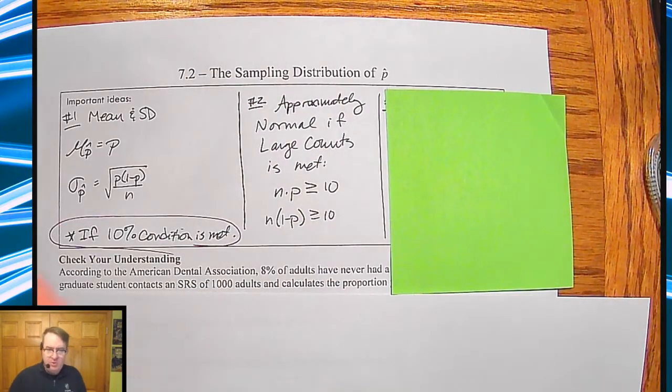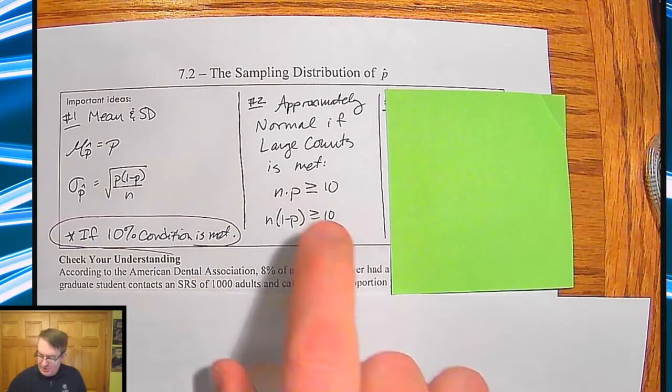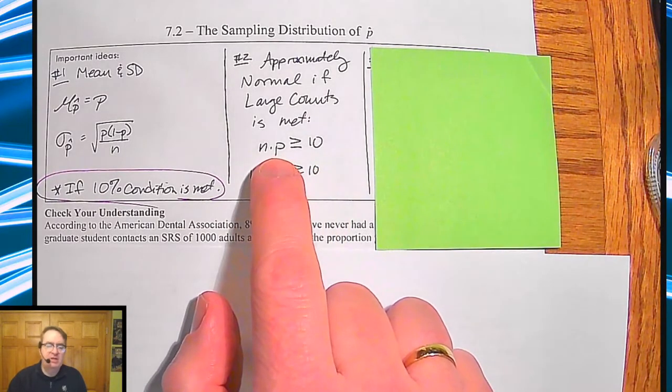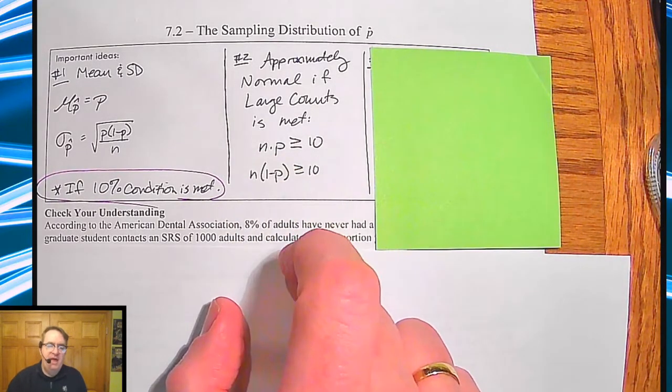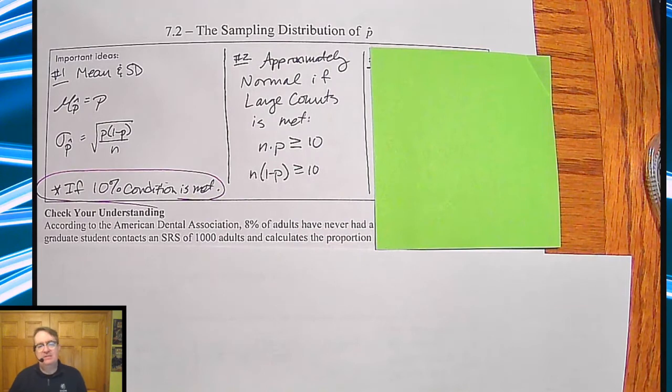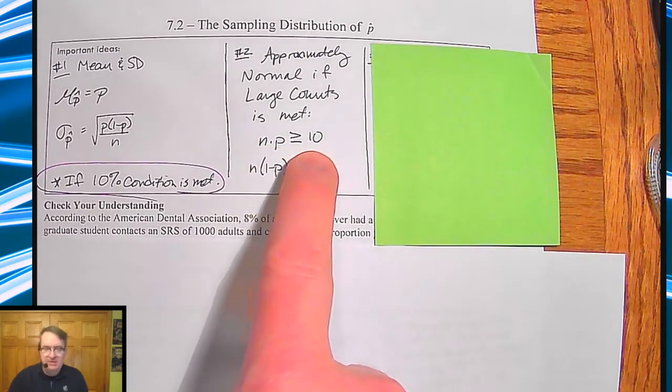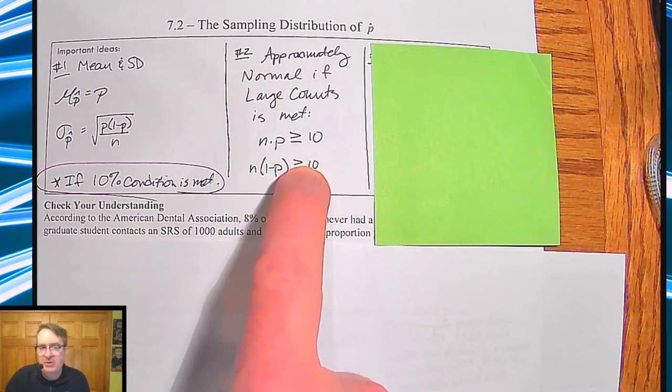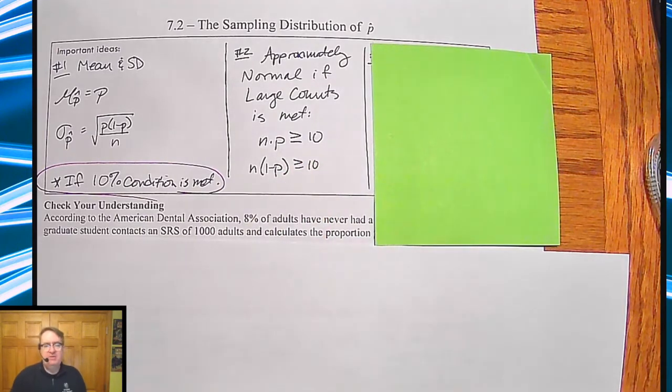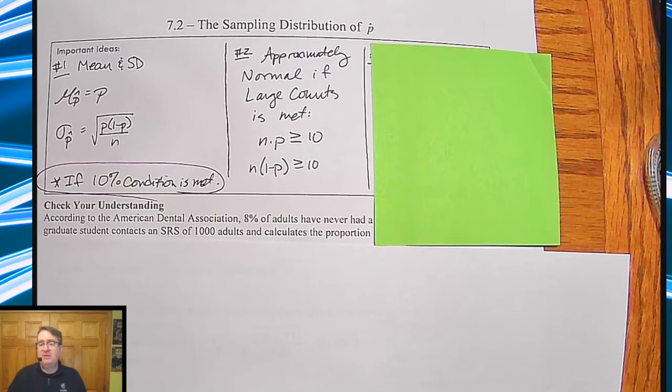Remember, everything's going to be approximately normal if large counts is met. And for large counts, you have to say that basically both the chances of success and failure have at least 10 instances of those things happening. So n times p has to be bigger than or equal to 10, n times not p is bigger than or equal to 10. Usually I will have a student who will say, what happens if it isn't? At this point in this class, we will typically say we're going to go ahead and proceed with caution just to see what the results are.